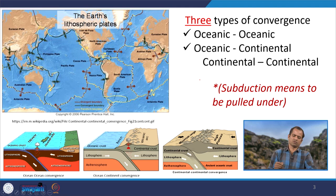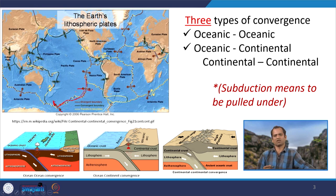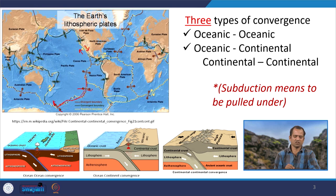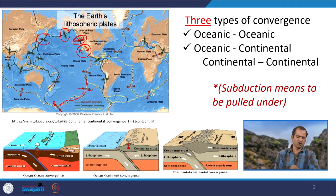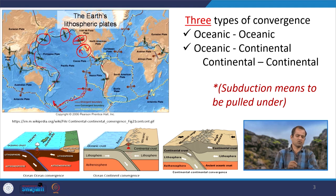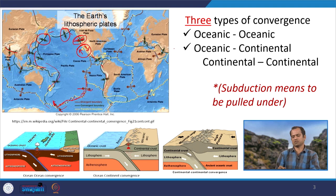Looking at the global tectonic map, plate boundaries are defined by arrows. Arrows moving away from each other mark the divergent plate margin or mid-oceanic ridge system. Arrows sliding past each other indicate the conservative plate margin. Arrows facing toward each other mark the convergent plate margin, which is distributed throughout, particularly around the Pacific and in the India-Eurasia system.